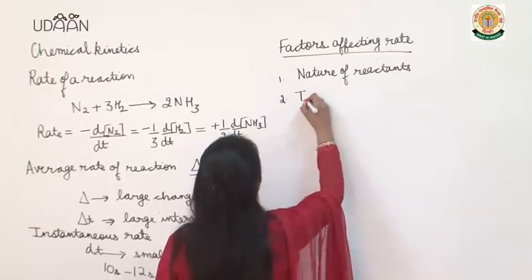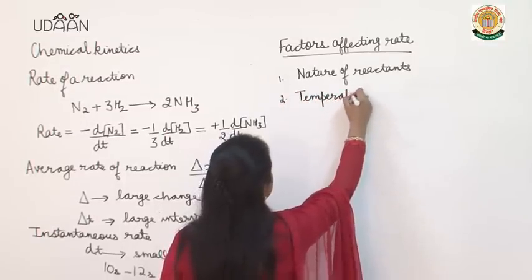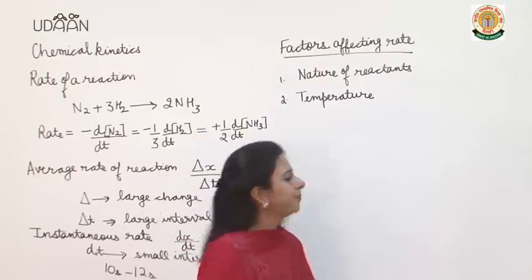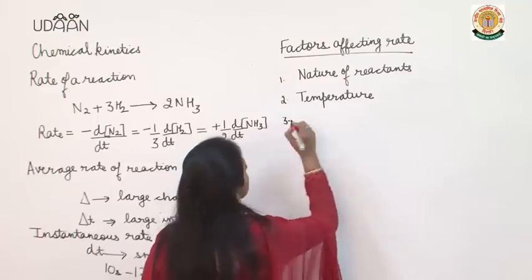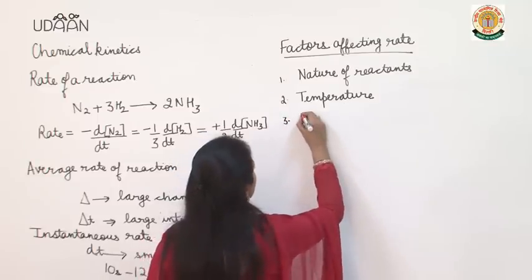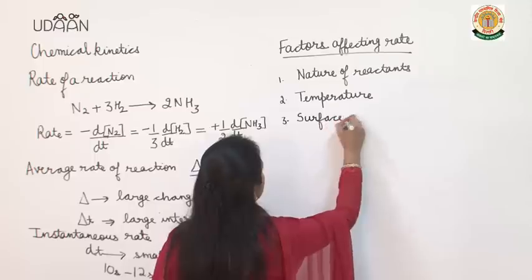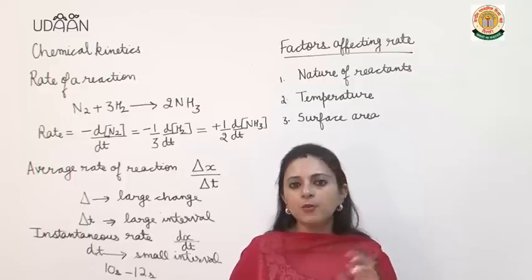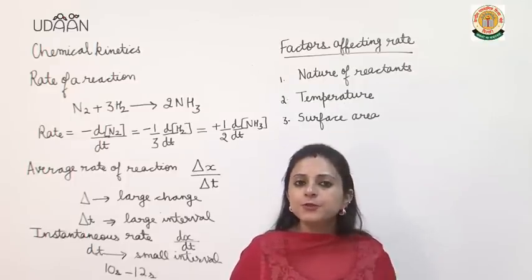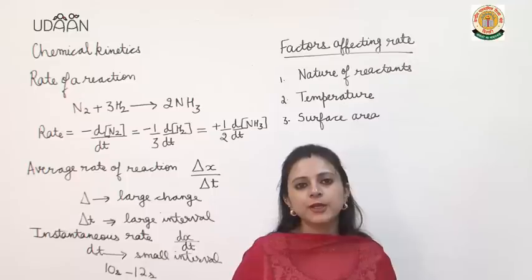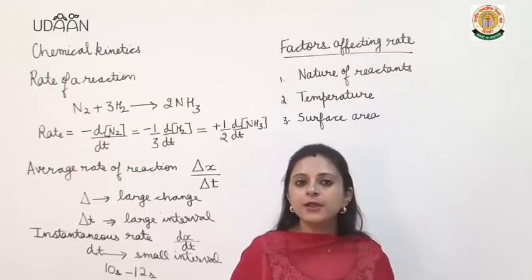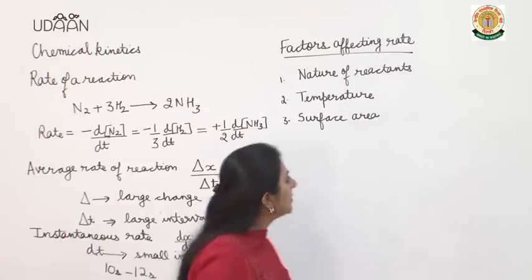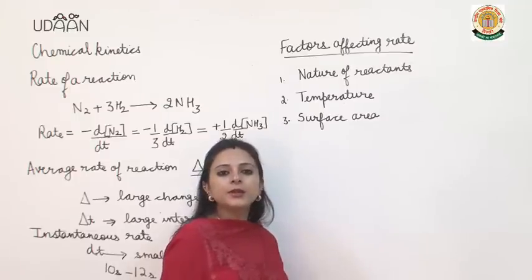Next is temperature. For every 10 degree Celsius rise or fall in temperature, the rate of reaction doubles. Then next is surface area. Suppose I take powdered sugar and a lump of sugar and dissolve them in water — the powdered sugar dissolves faster because its surface area is greater. So greater the surface area, greater would be the rate of reaction.